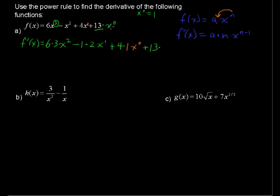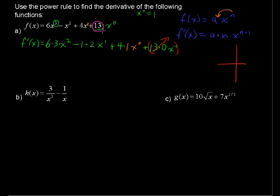We can say 13 times x to the 0, so applying the rule gives 13 times 0 — that exponent becomes the coefficient — times x to the negative 1. But since we have something times 0, this whole term goes to 0. Another way to see that: the derivative means the instantaneous slope of a function. For just the constant term 13, that's the line y equals 13, and all along that line the slope is 0. So the derivative of a constant is always 0.